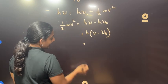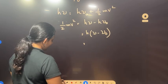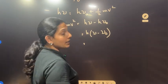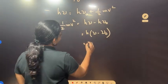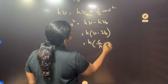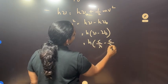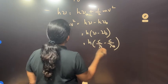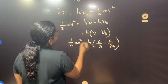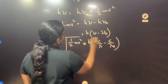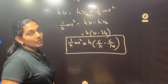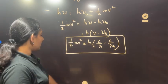In terms of wavelength: frequency is equal to speed by wavelength, so h into c by lambda minus c by lambda-0 equals half m v squared. This is Einstein's photoelectric equation.